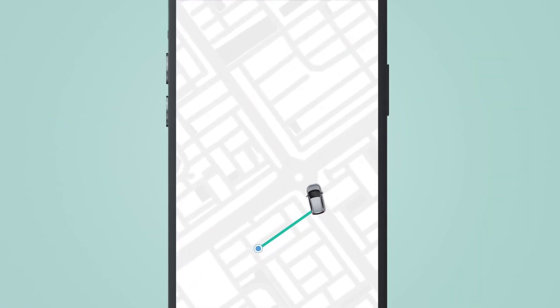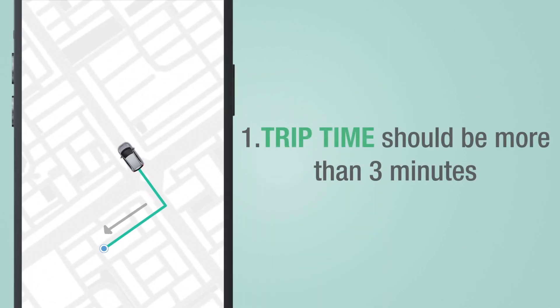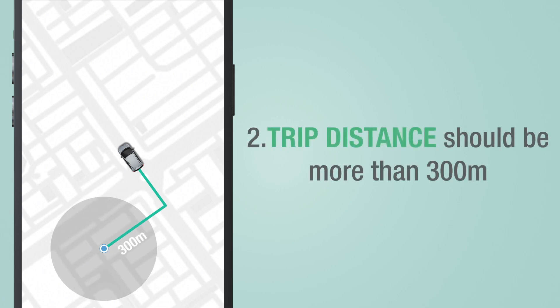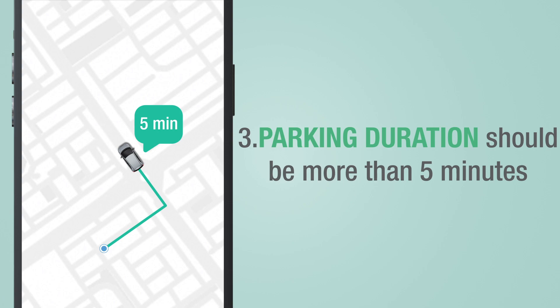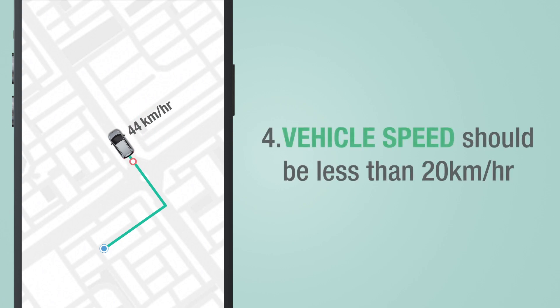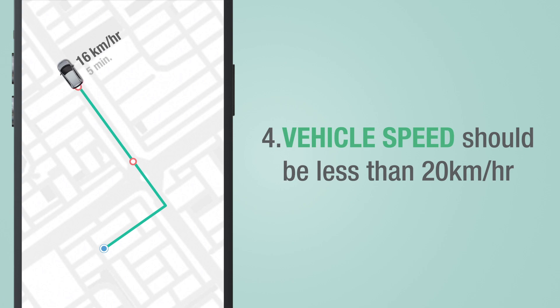The vehicle has to fulfill a few criteria for a stoppage to be recorded. Trip time should be more than three minutes from your start location or previous stoppage. Trip distance should be more than 300 meters from your start point or previous stoppage. Parking duration should be more than five minutes.